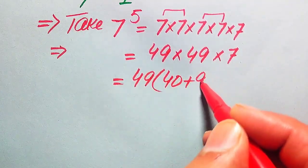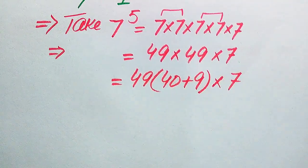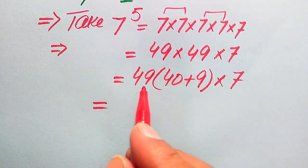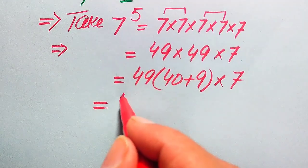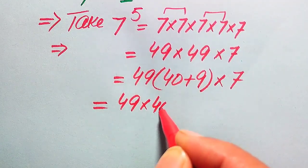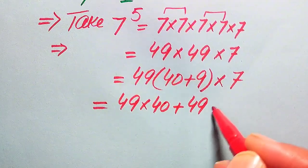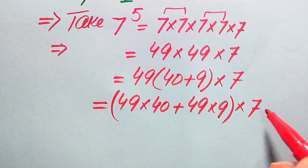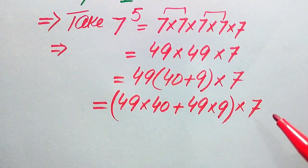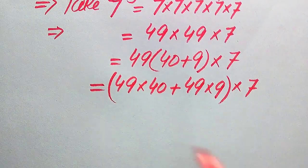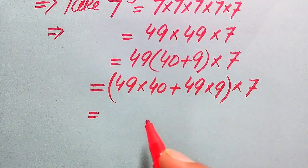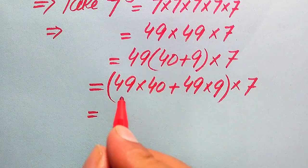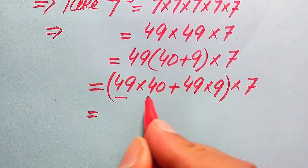We break 49 as 40 plus 9, and it is multiplied by 7. In the next step, by the distributive property, this becomes 49 multiplied by 40 plus 49 multiplied by 9, and the whole result is then multiplied by 7.